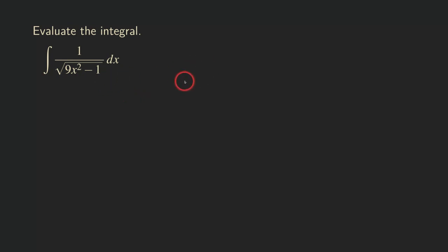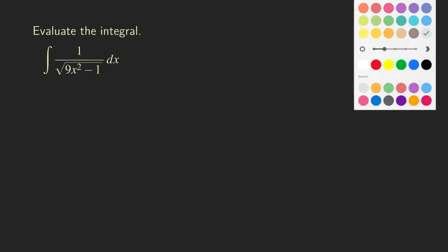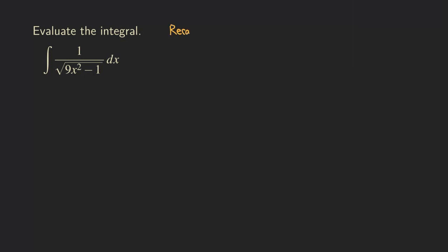So how do you know which trickster we are going to use? Let's just recall that secant squared theta minus 1 is equal to tangent squared theta. Do we see the minus 1 right here? We also have the minus 1 in the integrand. So what we are going to do is claim that 9x squared is equal to secant squared theta, and then we know what trickster we need.